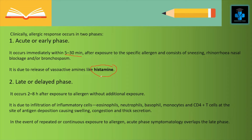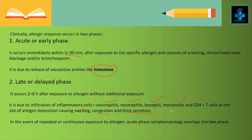Next we have the late or delayed phase. It occurs 2–8 hours after exposure to the allergen without additional exposure. It is due to infiltration of inflammatory cells such as eosinophils, neutrophils, basophils, monocytes and CD4+ T cells at the site of antigen deposition, causing swelling, congestion and thick secretions. In the event of repeated or continuous exposure to allergen, acute phase symptomatology overlaps the late phase.